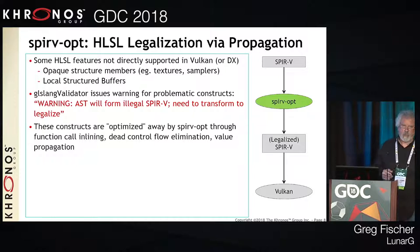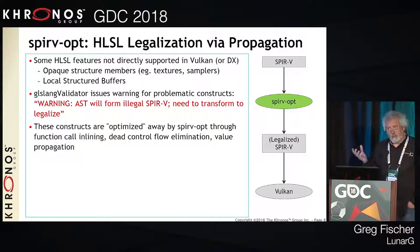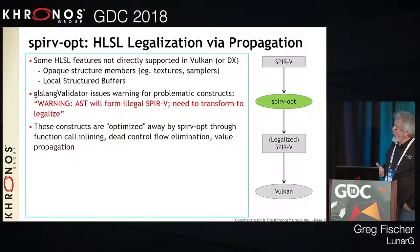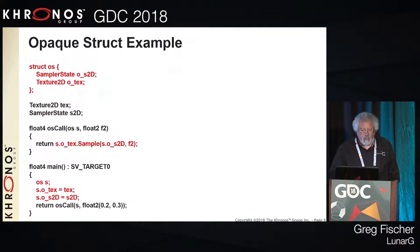I'm going to give just a couple examples of HLSL structures that do require transformation. GL Slang Validator, when it compiles HLSL and finds one of these structures, will actually emit a message saying that legalization is required. These constructs are optimized away through variations of function call inlining, dead flow elimination, value propagation, and dead code elimination.